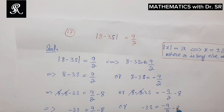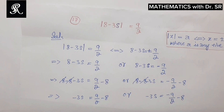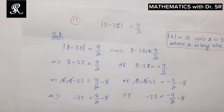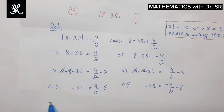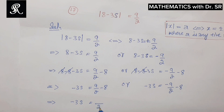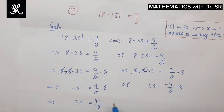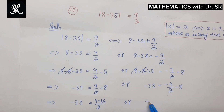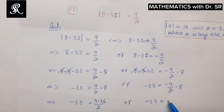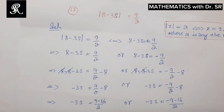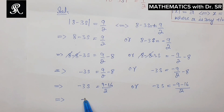Now we simplify by taking the LCM. We consider 8 as 8/1, so the LCM is 2. For the first equation, the right side becomes 9 minus 16 over 2. Similarly for the second equation, the right side becomes negative 9 minus 16 over 2. So we have negative 3s on the left in both cases.